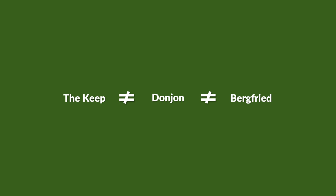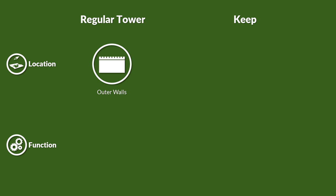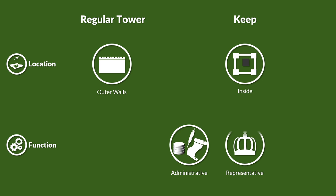There were special kinds of towers which, to a certain degree, were also the earliest forms or at least precursors of castles — namely the Keep, Donjon, and Bergfried. They are similar in many aspects but differ in time and region. The main difference of a Keep from a regular tower was location and function: whereas a tower was usually part of the outer walls, the Keep was located inside the castle and often had additional administrative, representative, and residential functions.